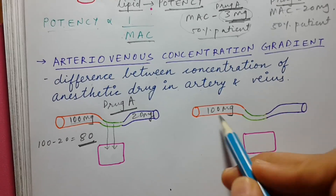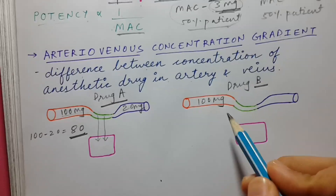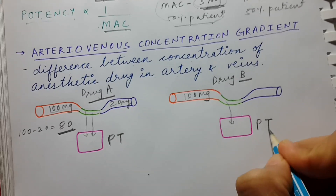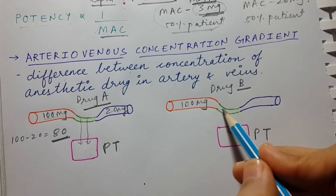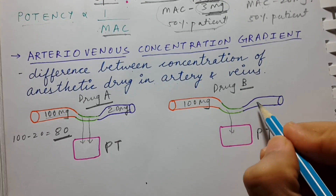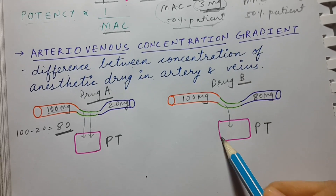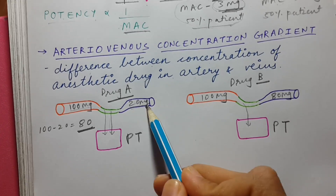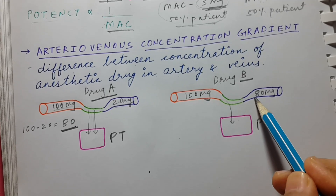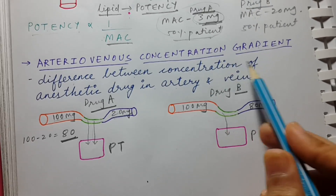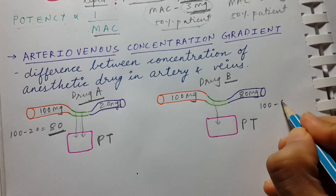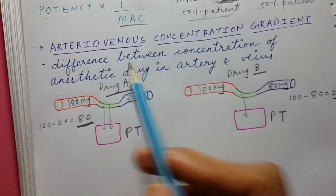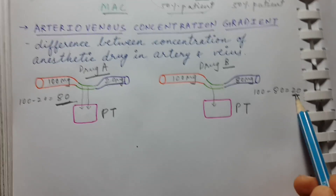In drug B, if the arterial concentration is also 100 mg but the peripheral tissue takes up less, leaving 80 mg in the vein, the arteriovenous concentration gradient is 100 minus 80, which equals 20. So drug A has a high arteriovenous gradient while drug B has a low one.